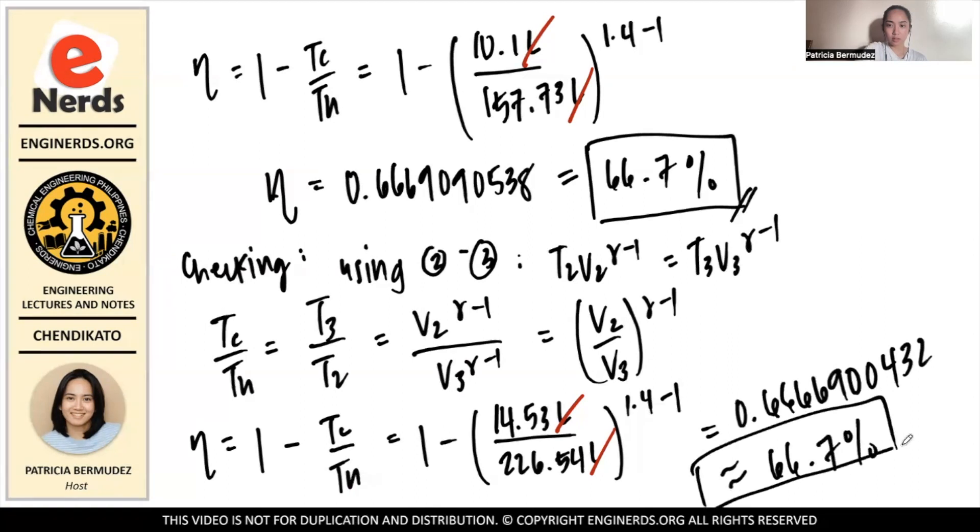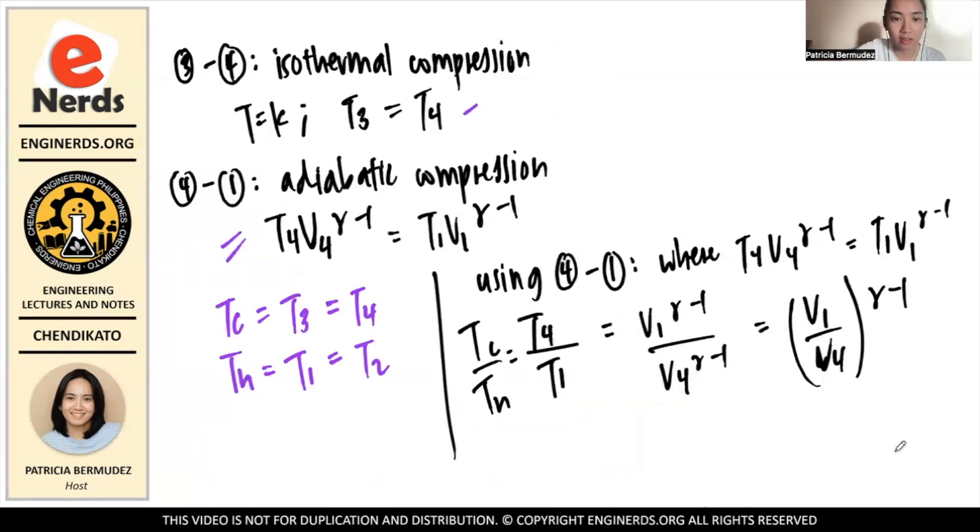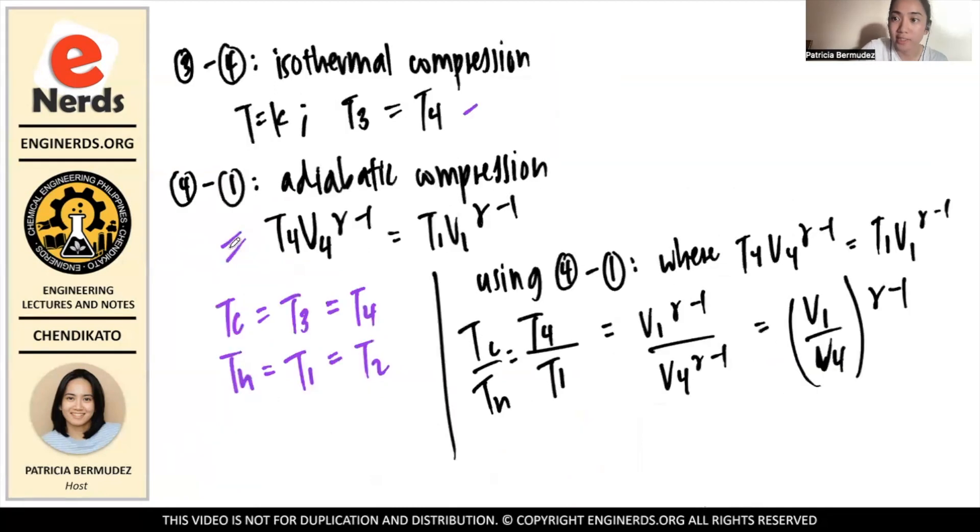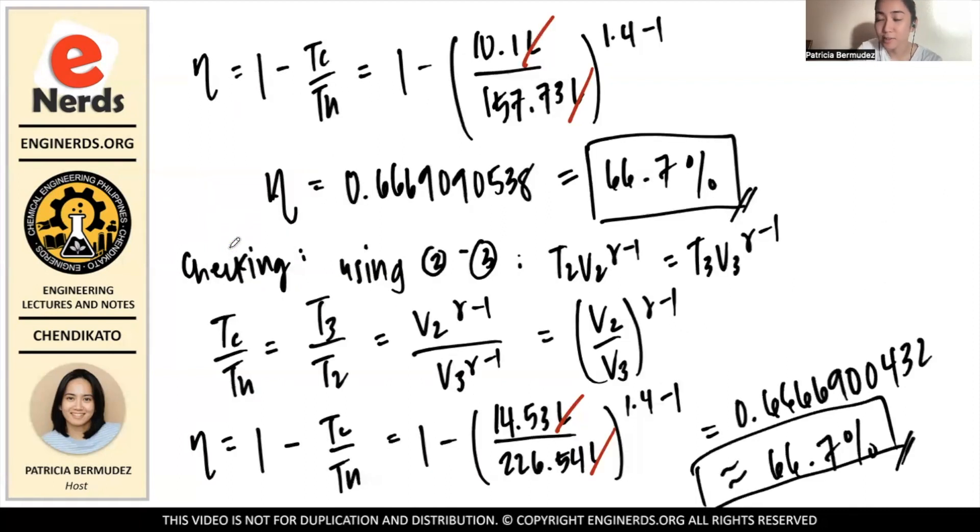And that is our solution for the problem. And we have verified that it is indeed the same. Whichever you use, whether process 2 to 3 or process 4 to 1, the efficiency you will get is the same because it should be. And that is the Carnot cycle. So that is our solution for the problem. I hope you guys learned a lot from today's video. Thanks a lot for listening and stay tuned for the next one. Bye-bye.